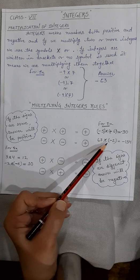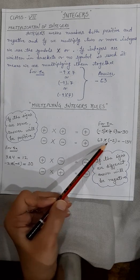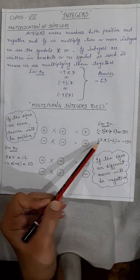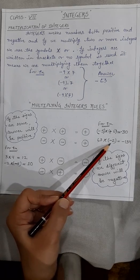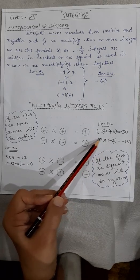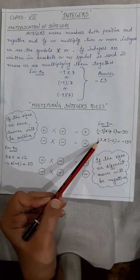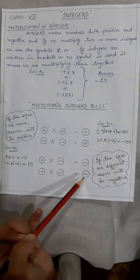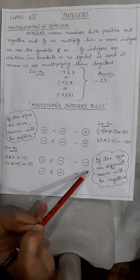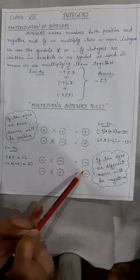Next example: 67 multiplied with minus 2. Here again, different signs are there — one is positive and one is negative. So multiply the numbers only: 67 into 2 is 134, and the sign will be negative. Is it clear everyone?